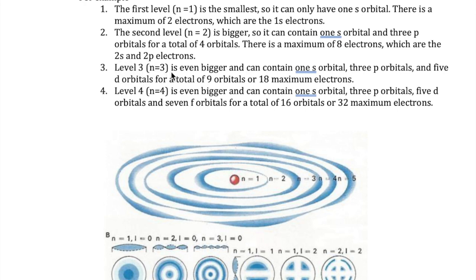Level three, or n equals 3, is even bigger and can have more orbitals: one S orbital, three P orbitals, and five D orbitals. The total number of orbitals is nine, and a maximum of 18 electrons can be found in level three.